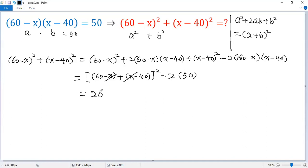So we get 20 squared minus 2 times 50, which is 100. So you see, 20 squared is 400 minus 100. So the final answer would be 300.